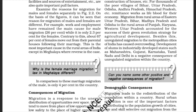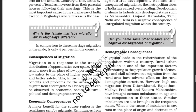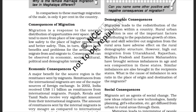For example, work and employment have remained the main cause for male migration at 26%, while it is only 2.3% for females. Contrary to this, about 67% of females move out from their parental houses following marriage. This is the most important cause in the rural areas of India, except in Meghalaya where the reverse is the case. In comparison, marriage migration of males is only 4% in the country.